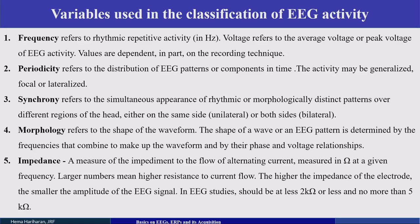An important impact on the signal-to-noise ratio is the common mode rejection. The common mode rejection is the ability of the recording system to reject noise that is common in the active and reference electrodes. Any noise identical in both active and reference channels gets attenuated in the differential amplifier, which subtracts the reference voltage from the active electrode voltage. A higher common mode rejection ratio decreases noise contribution and increases the signal-to-noise ratio.